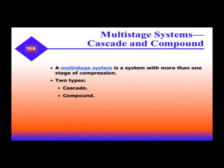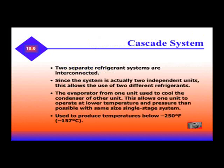Multi-stage systems can be known as cascade or compound systems. A multi-stage system is a system with more than one stage of compression. We have two types: cascade and compound. In the cascade system, two separate refrigeration systems are interconnected. Since the system is actually two independent units, this allows for the use of two different refrigerants. The evaporator from one unit is used to cool the condenser of the second unit. This allows one unit to operate at lower temperature and pressure than possible using the same size single stage system, and it's used to provide temperatures below negative 250 degrees.